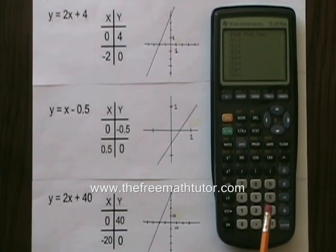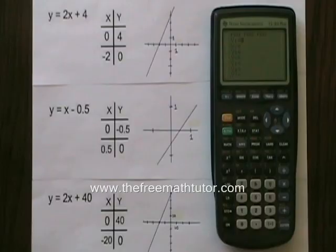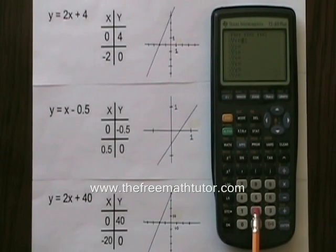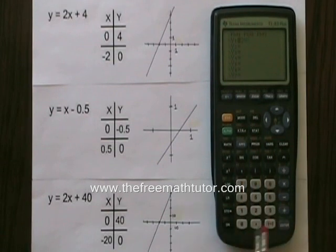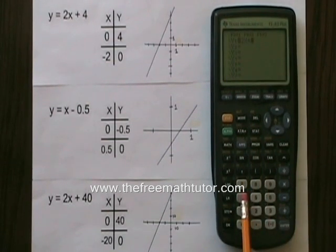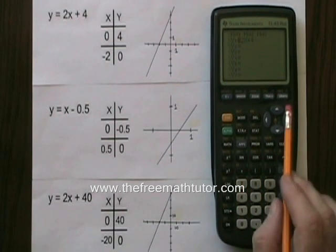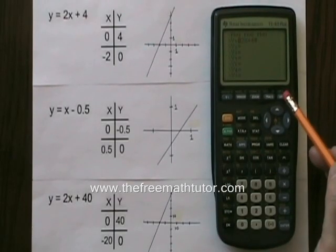So I have to type in the 2x plus 4 part in that first line. It says y equals. I put 2, this is the x button here, plus 4. And now I press the graph button, which is up here on the top right.